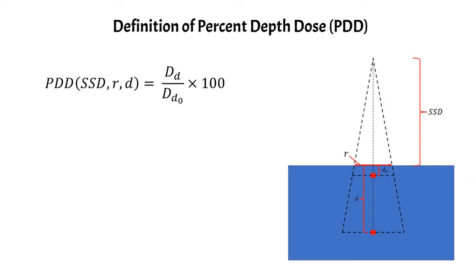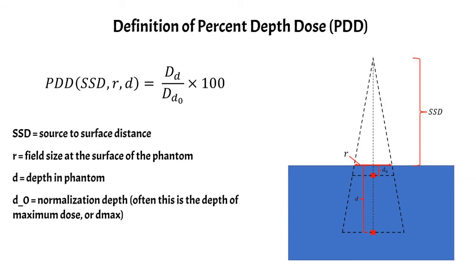The PDD is a function of your SSD, which is your source surface distance. It's a function of r, which is the field size defined at the surface of the phantom, and it's also a function of d, which is the depth of the point that you're looking at in the phantom.